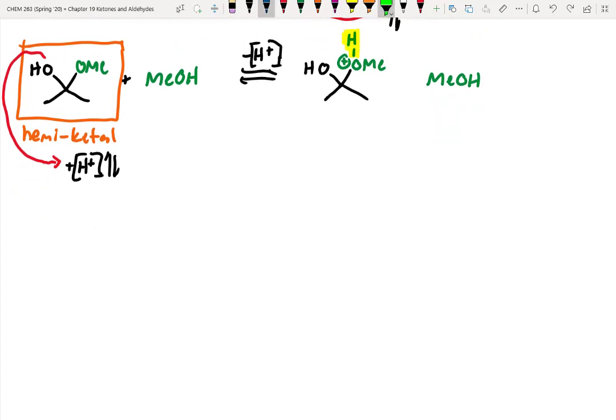Alright, so when we've done that, we're going to get an intermediate that's now OH2, right? And then on the other side, we still have the OMe group. Alright, so we've got that added in. We still have our methanol floating around. But as I've told you throughout the year, anytime you form H2O where the oxygen is positive, that's a really good leaving group.